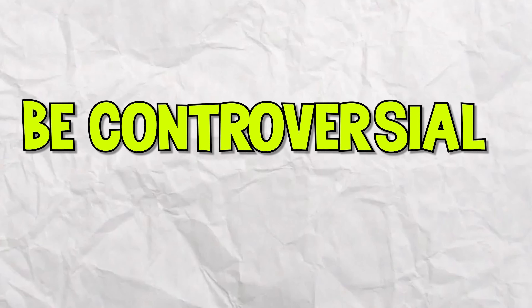The first way to use the green screen effect is being controversial. This would require you to use something in the background that is controversial within your niche. An example would be if you make videos about sneakers or shoes, putting the most controversial sneaker behind you — something all the people in your niche are going to know. Then you're going to give your controversial opinion, which is great for going viral on TikTok.